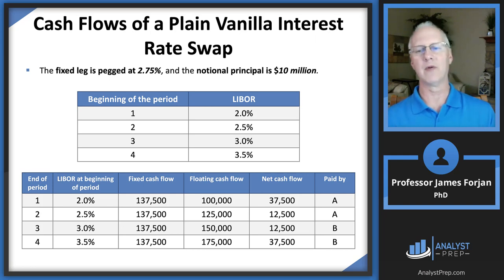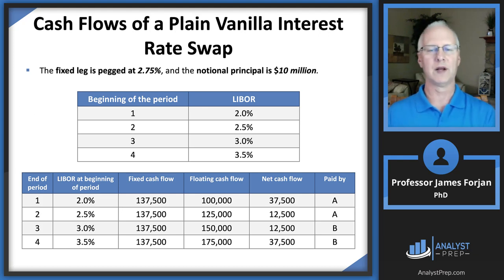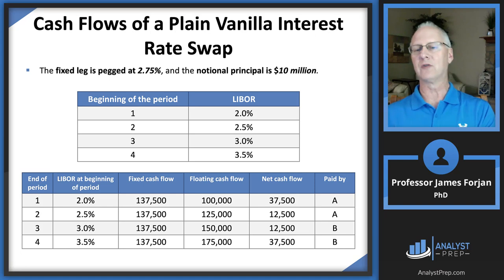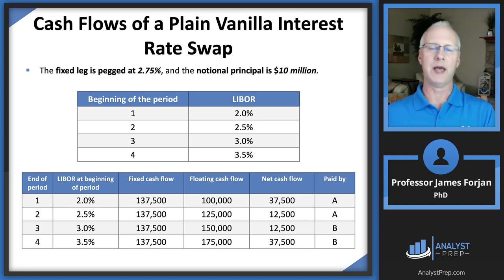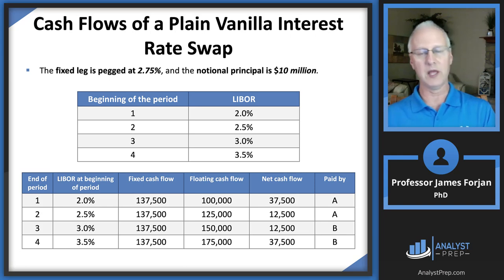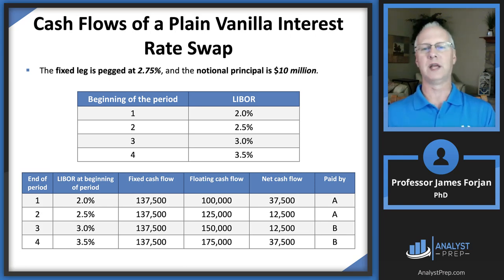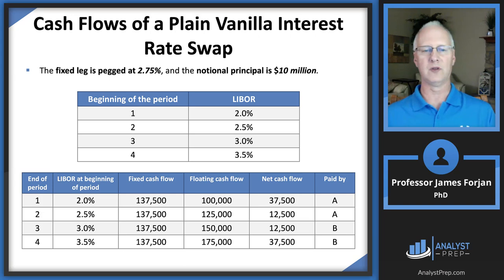Then Bank B pays $12,500 and $37,500 in the following two six-month periods. A and B roughly break even — ignoring time value of money. Of course, those net cash flows depend entirely on what LIBOR is. LIBOR could have been two, then eight, then one, then twelve — and those payments can flip-flop over time.